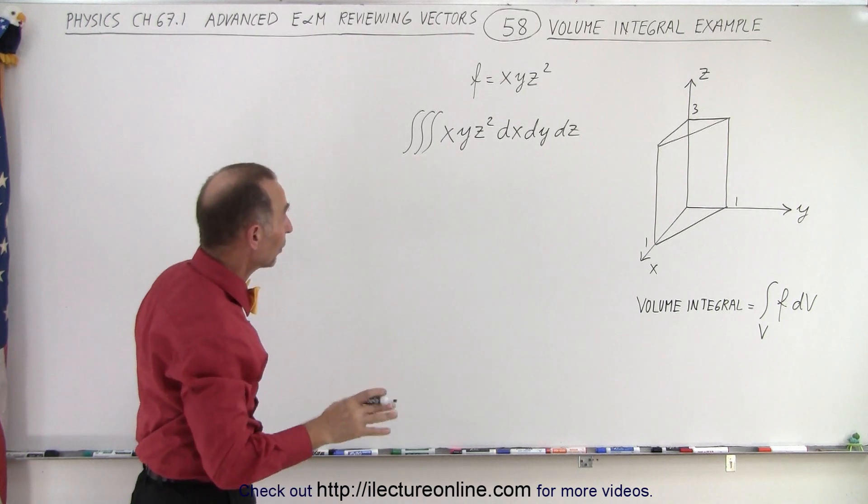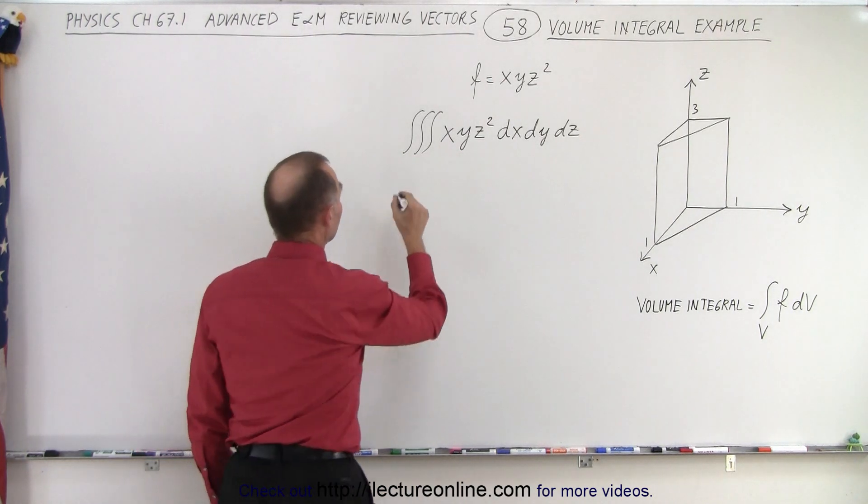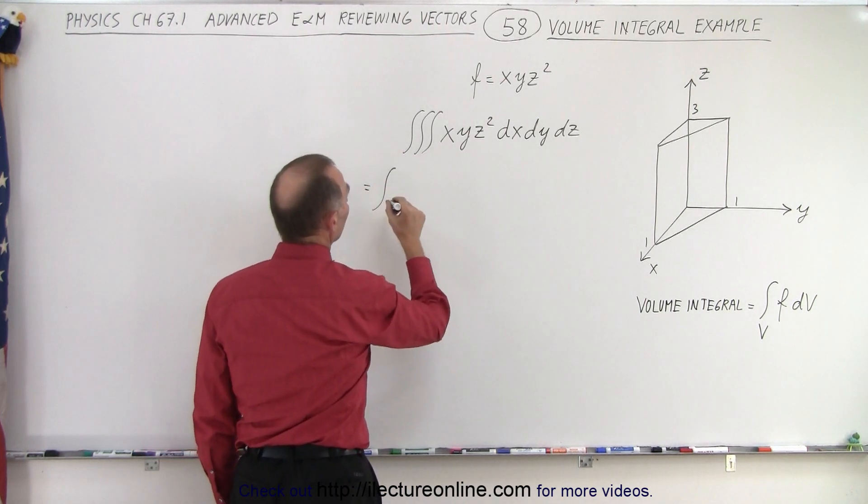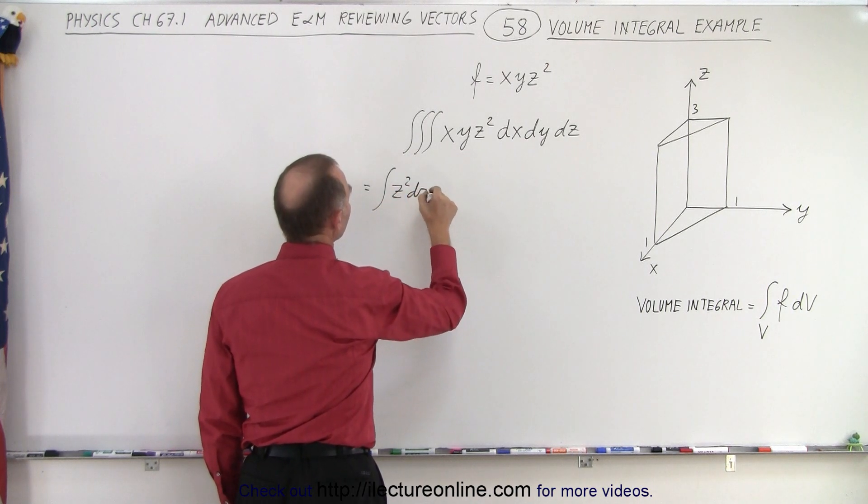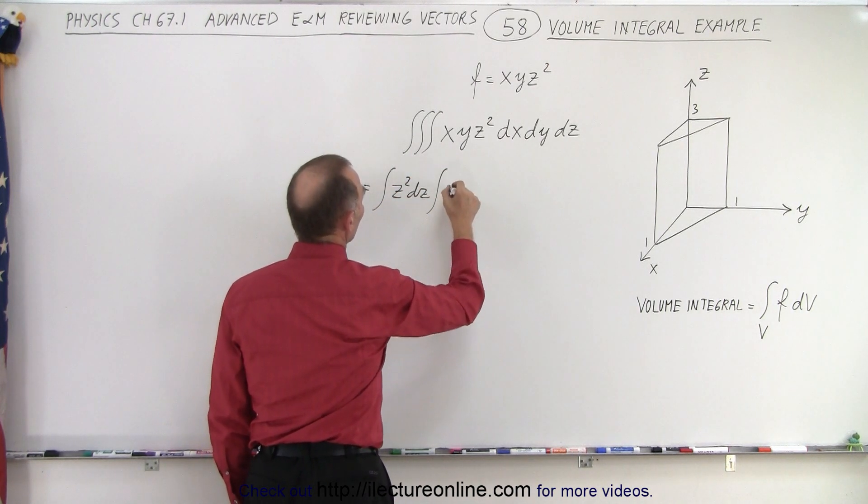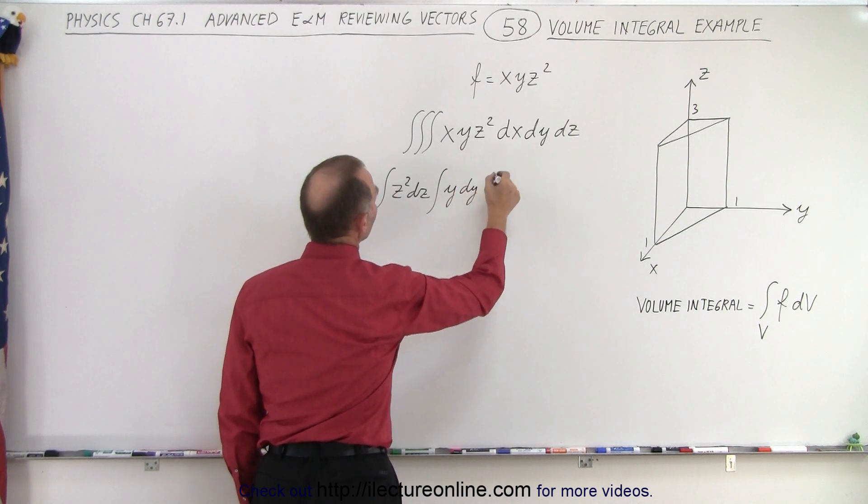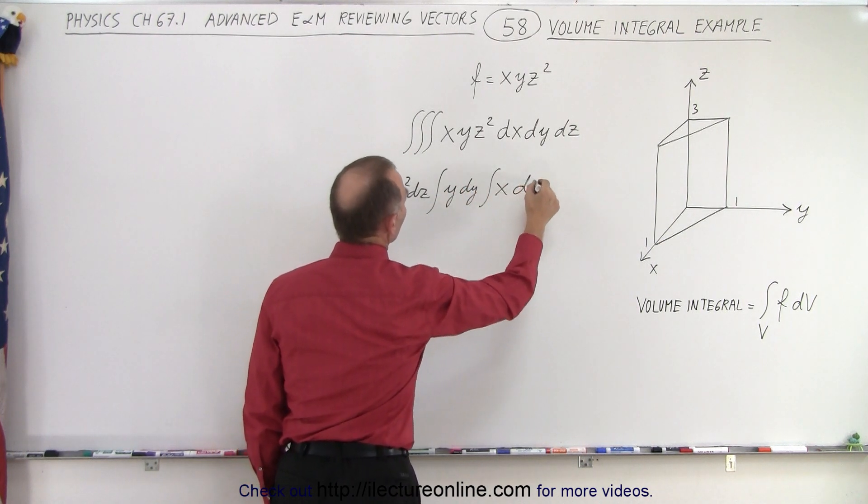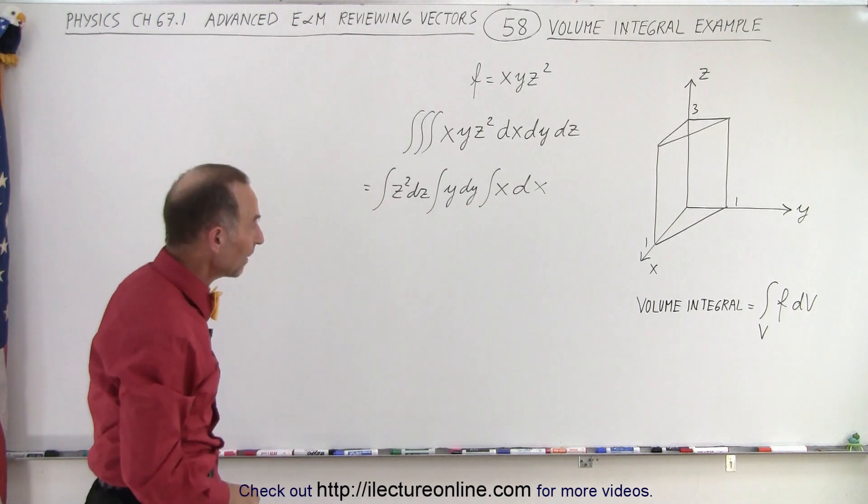So what we're going to do now is the following. This can be written as the integral of z squared dz times the integral of y dy times the integral of x dx. So we separate the variables like that, do one variable at a time.